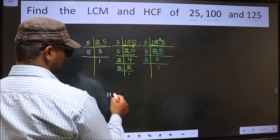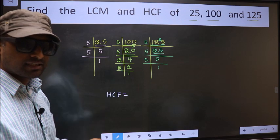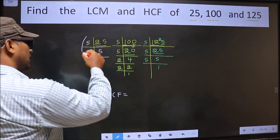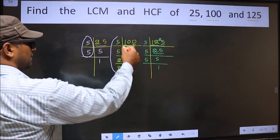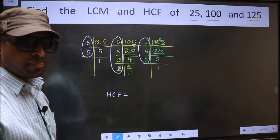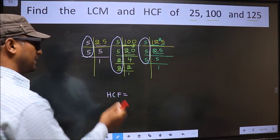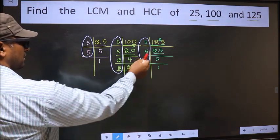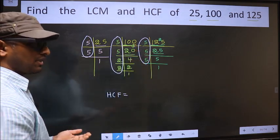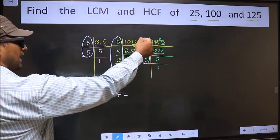So our HCF is, HCF is the product of numbers which should be present over here, and here, and also here. I repeat, HCF is the product of numbers which should be present in these 3 places. That is here, here, and also here. So now, let us find the numbers which are present here, here, and here.